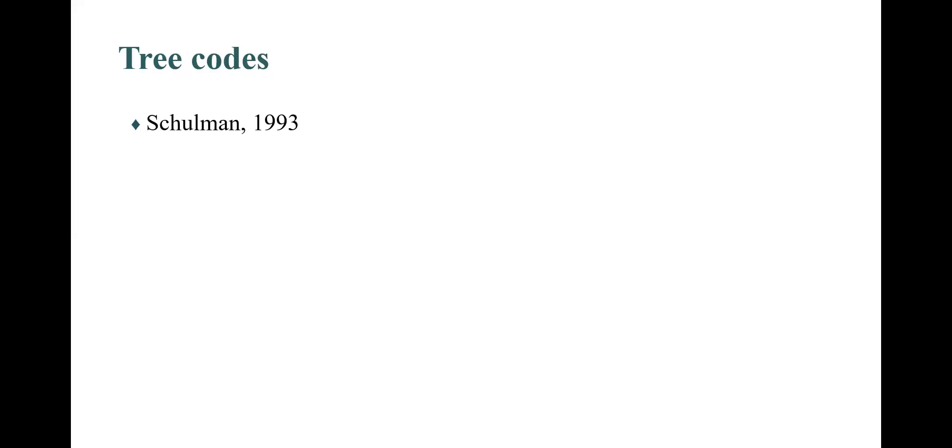Tree codes are combinatorial structures introduced by Leonard Schulman in 1993 and are a key ingredient in interactive coding schemes. A tree code is an edge coloring of a complete rooted tree of depth n, in which each message uniquely encodes a walk from the root to a leaf.